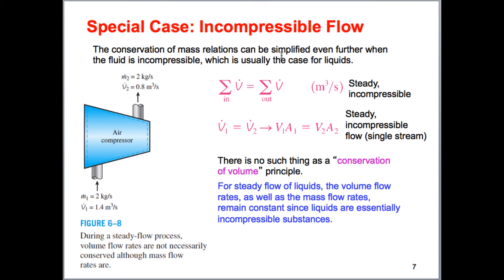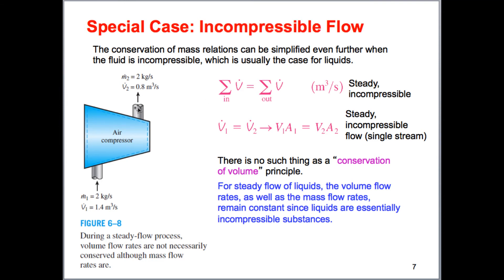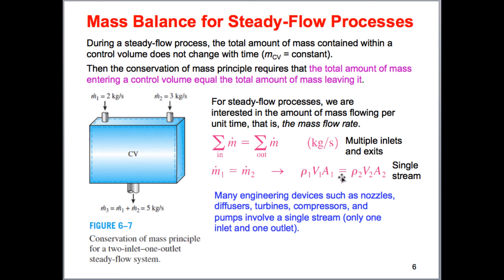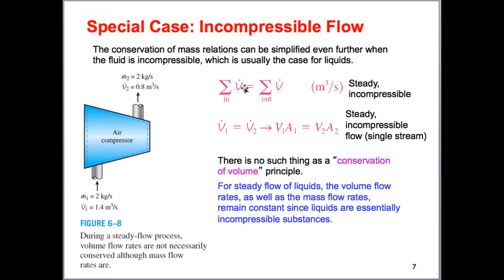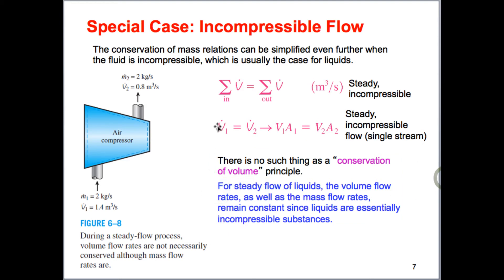For incompressible flow — where density does not change from inlet to exit — we can simplify rho·A·V₁ = rho·A·V₂ by canceling the equal densities. This gives us A·V, the volumetric flow rate in, equal to the volumetric flow rate out. It's important to note there is no such thing as a conservation of volume principle — this only applies as a special case for incompressible, steady flow.